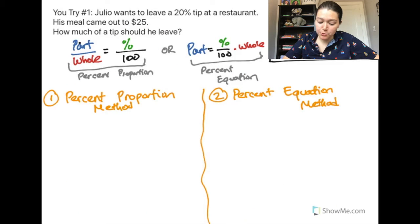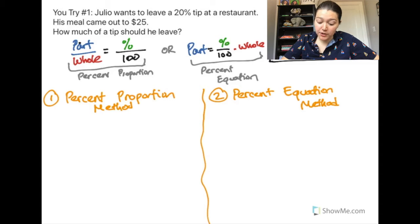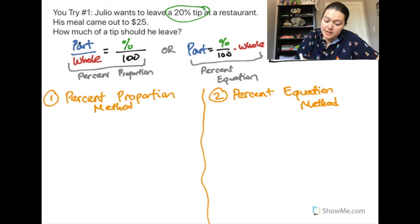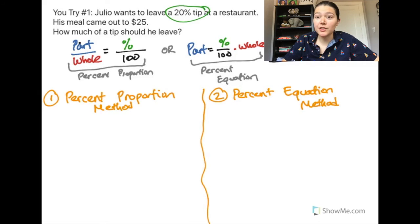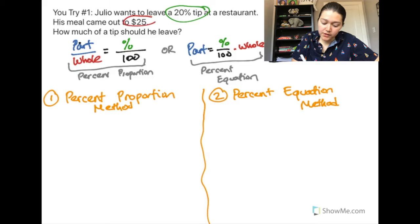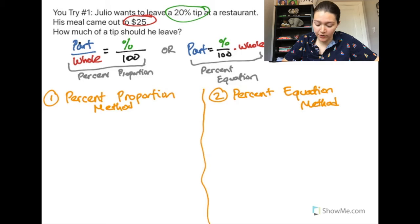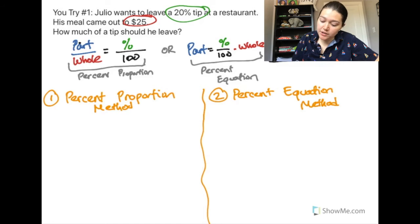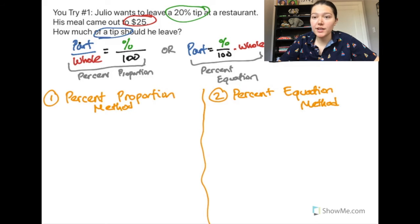Now you try: Julio wants to leave a 20% tip at a restaurant. His meal came out to $25. How much of a tip should he leave? The 20% tip is our percent, and the $25 meal is our whole — like the subtotal. Use either the percent proportion or the percent equation to figure out how much of a tip Julio should leave, which is the part.